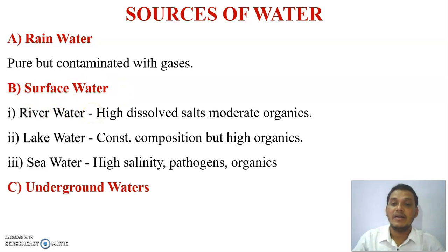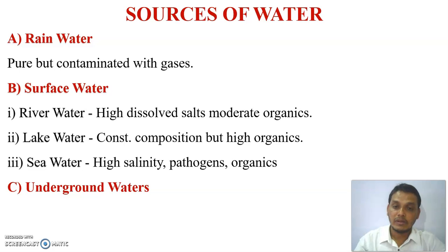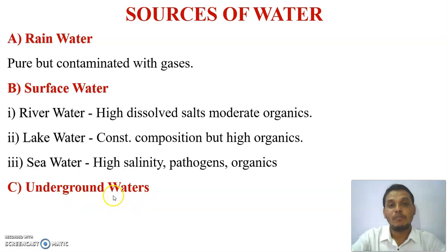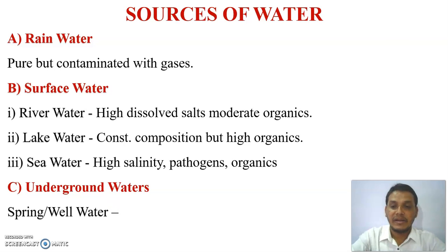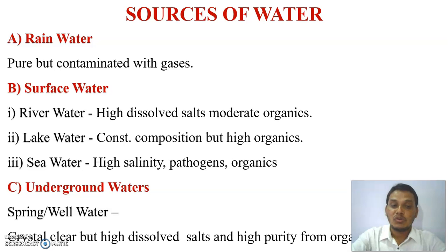The third source is underground water, which is actually the purest form of water. When rain water percolates into the soil, whatever salts and gases are present get expelled out during the percolation process. Underground water includes spring water and well water, which is mostly crystal clear, though it may contain some dissolved salts and organic matter.